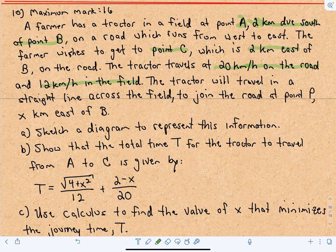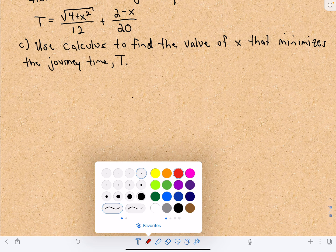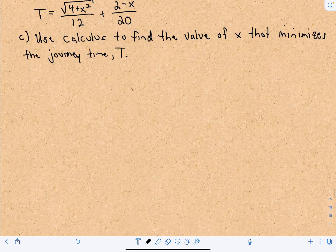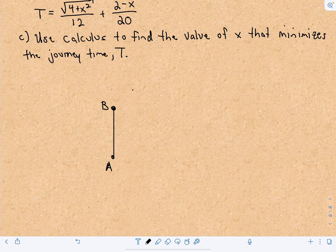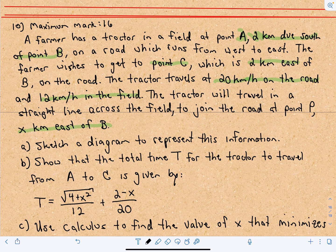The tractor will travel in a straight line across the field to join the road at a point P, X kilometers east of B. First, we've got to sketch a diagram. So here's point B, and here's point A, because it says point A is two kilometers due south. So that's going to be two kilometers — I'm going to leave the units off just to make it a little less clunky.